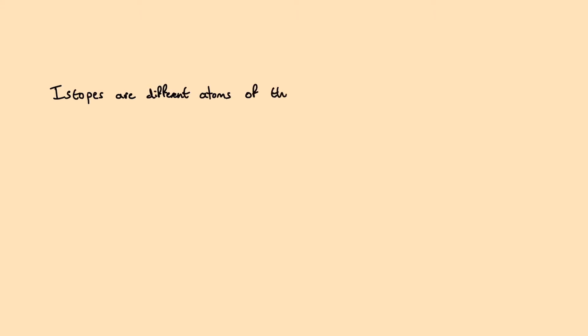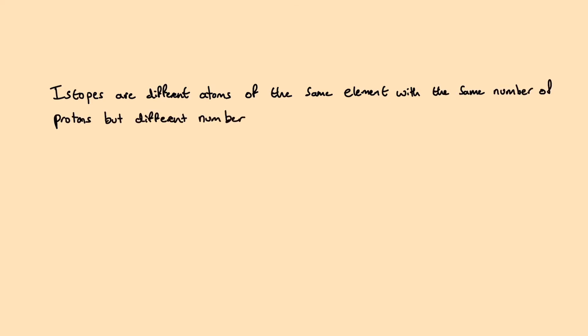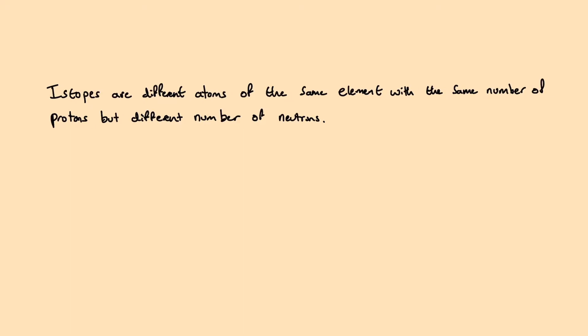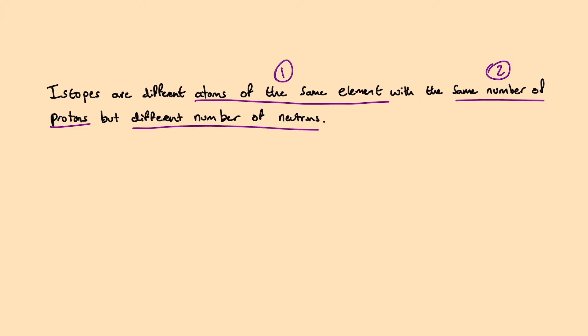Isotopes are different atoms of the same element that have the same number of protons but a different number of neutrons. The three most important things to remember about this definition are that these isotopes are atoms of the same element, they have the same number of protons but a different number of neutrons, as you can see labelled 1, 2, and 3.